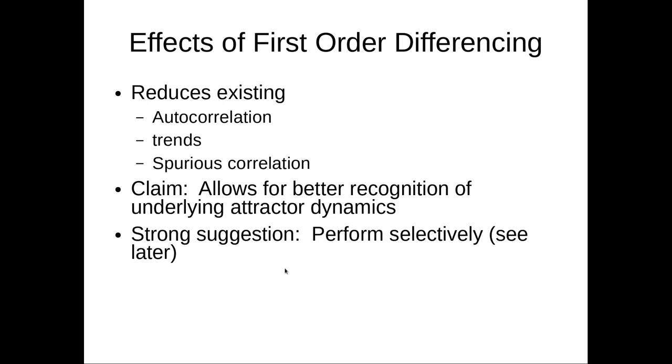The idea behind first-order differencing is you take the original data set and you create a new data set whose values are just the differences of successive values in the original data set. So if you had an original data set which had X of 0, X of 1, X of 2, X of 3, X of 4, the new data set would be X of 1 minus X of 0, then X of 2 minus X of 1, and then X of 3 minus X of 2.